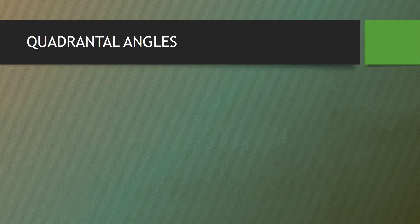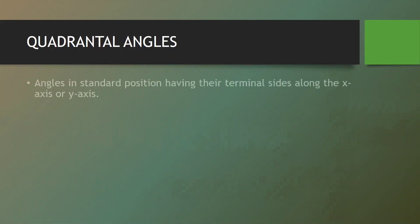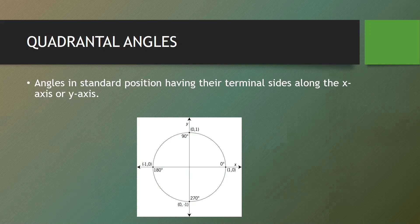Next are the quadrantal angles. Quadrantal angles are angles in standard position having their terminal sides along the x-axis or y-axis. These are the angles with measures 0 degrees, 90 degrees, 180 degrees, 270 degrees, 360 degrees, and all multiples of 90.